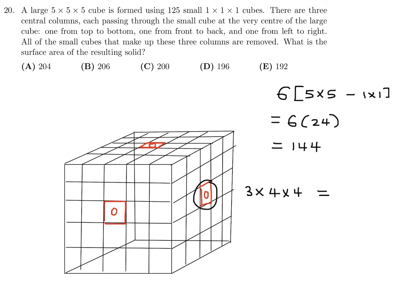3 times 4 times 4. What is that? 16 times 3, which is 48. I have to add this 144 to the 48. And when I do, I get 192. And I believe that's it. Number 20, the answer is E.